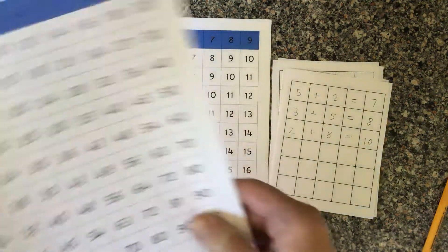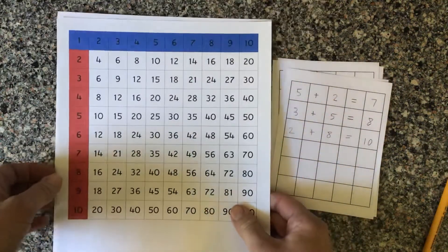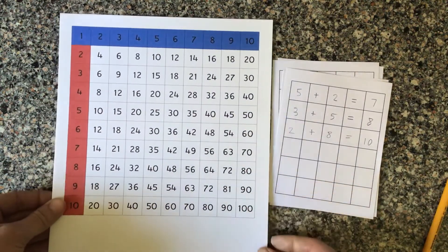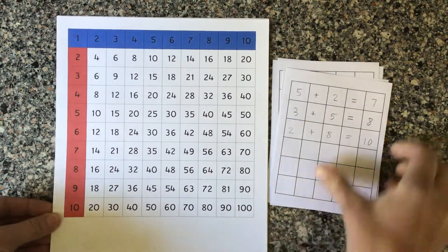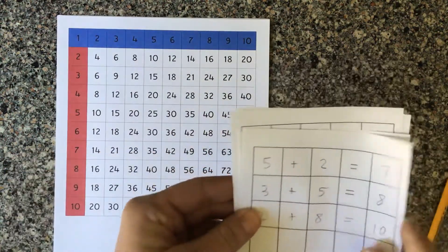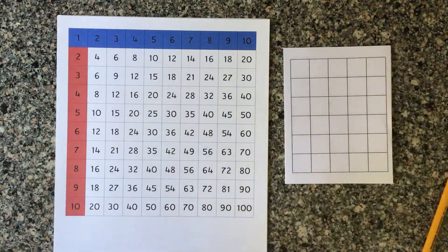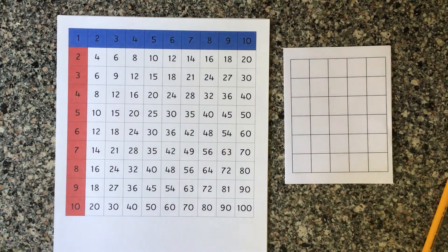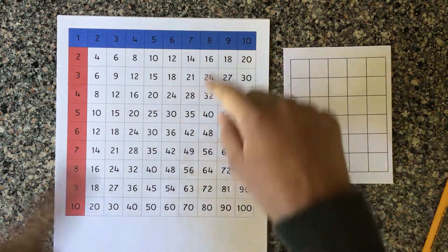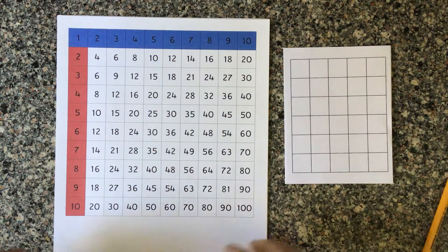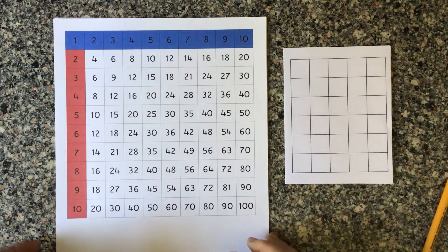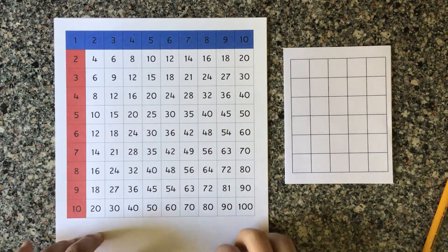Now I'm also going to show you our multiplication board, which looks almost identical. I'm going to start a new sheet here. So after your child has had a lot of practice with addition, the multiplication is following the same sort of concept, and they can do this multiplication chart in the same way.